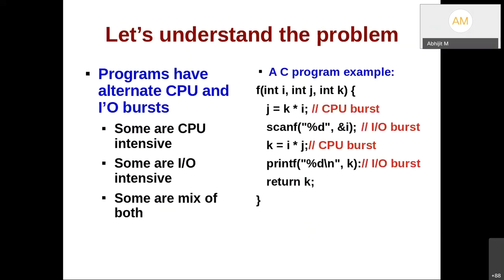To understand this with respect to a C program: consider a function F doing some computation with no IO — all in-memory CPU computation — that represents a CPU burst. A call to scanf will make the process wait, so that involves an IO burst. Note that as part of executing scanf, you run C library code, then kernel code, and a switch function — all of them will execute on CPU, constituting part of the CPU burst. It is the time the process spends in the wait queue that forms the IO burst.